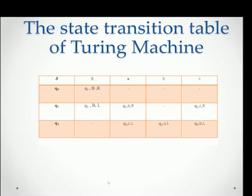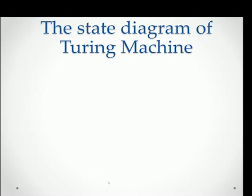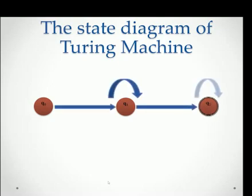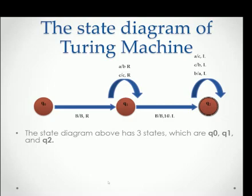This is the state transition table of an example of a Turing machine. This is the state diagram of an example of the Turing machine.